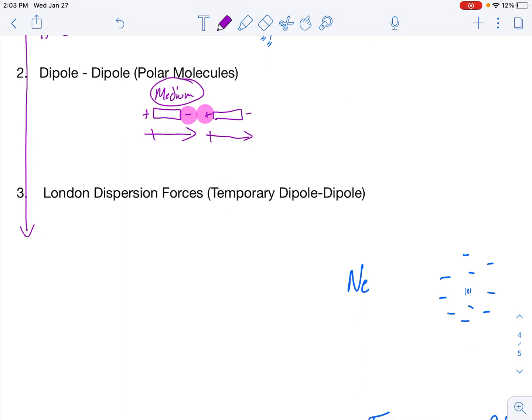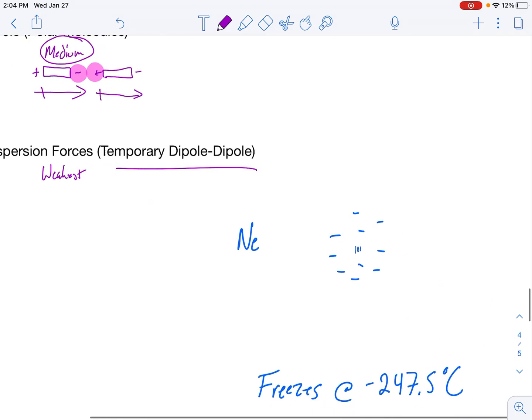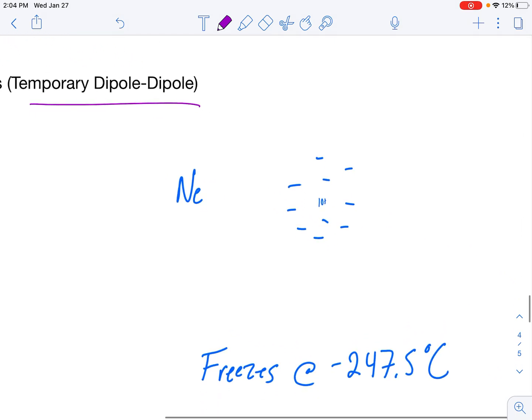London dispersion or a temporary dipole-dipole is the weakest of all three. That weakest can change, but for right now, we're just going to call it the weakest. Now, to explain a London dispersion in a temporary dipole, I've pulled up neon here. So here's neon. It has 10 protons, 10 electrons. Neon freezes at -247.5 degrees Celsius. It freezes because I would have to have an attraction between my atoms.